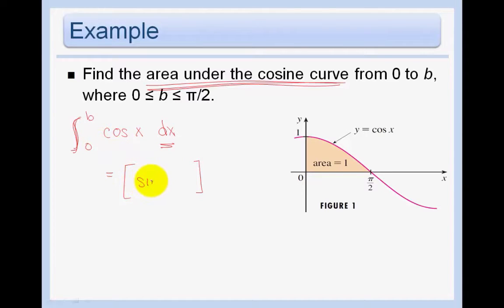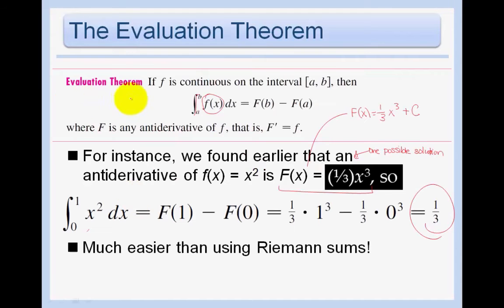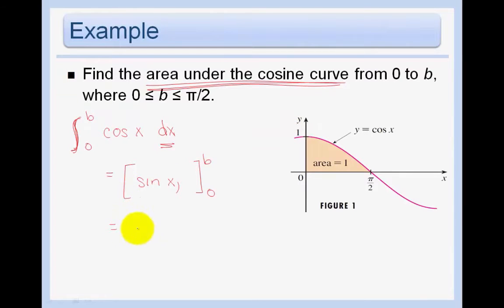It's sine. And we're evaluating it between 0 and b. So we take away the integral sign as soon as we take the antiderivative. So then we evaluate and we just use, go back to this evaluation theorem, f(b) minus f(a). So we stick in, this is a b and this is an a. Sine b minus sine 0. And the sine of 0 is just, what is the y coordinate at this point? It's just 0. Sine of 0 is 0. So our answer is just sine of b.